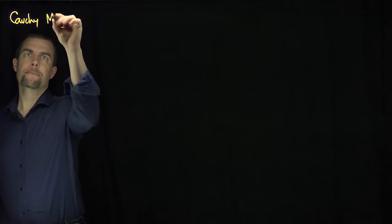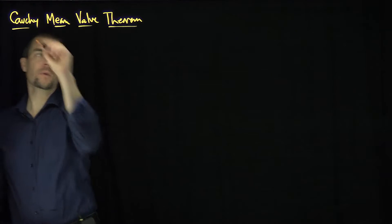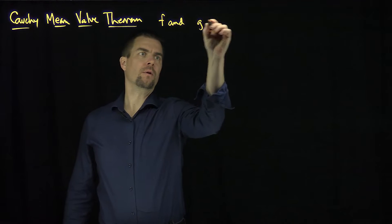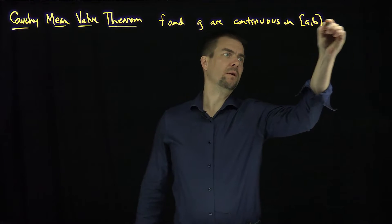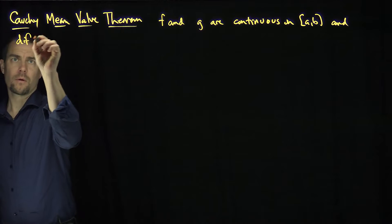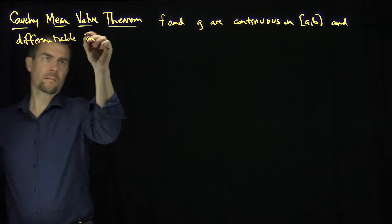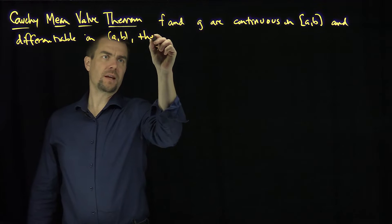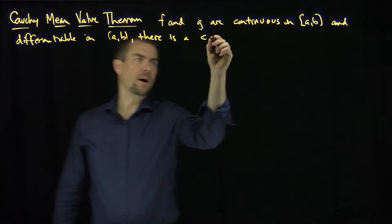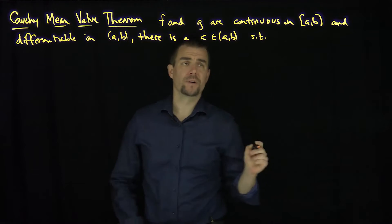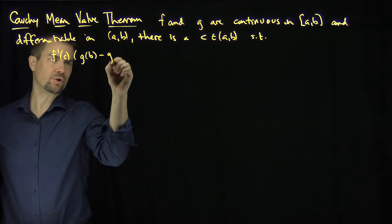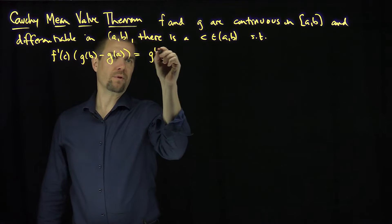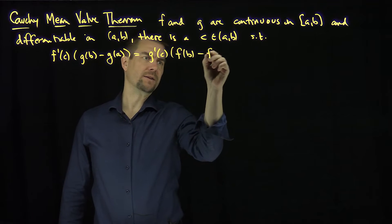The Cauchy Mean Value Theorem states the following. It states that if f and g are continuous on [a,b] and differentiable on (a,b), then there is a c on the open interval (a,b) such that f'(c) times g(b) - g(a) is equal to g'(c) times f(b) - f(a).